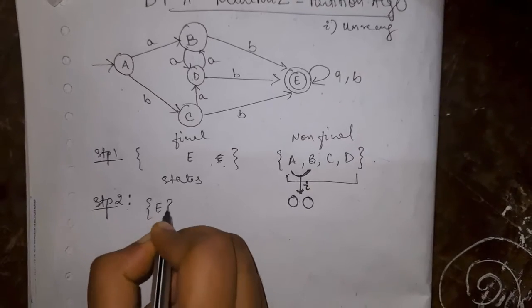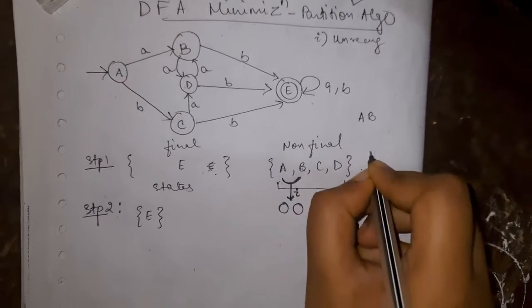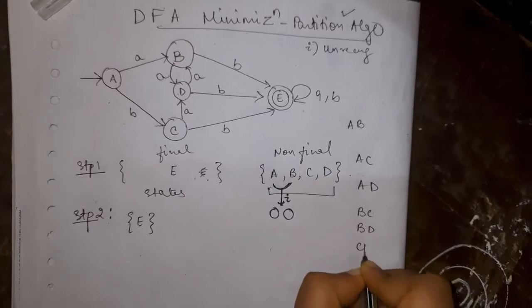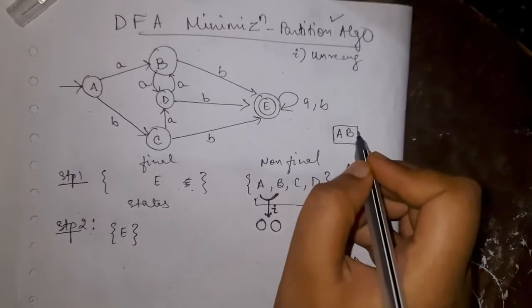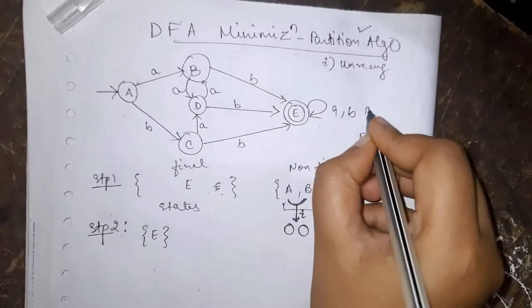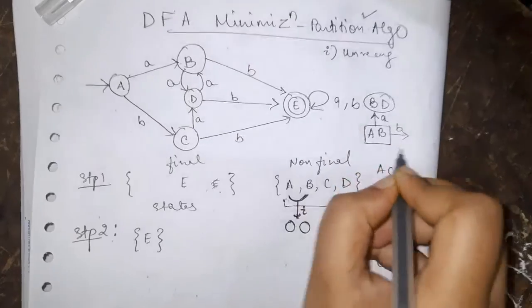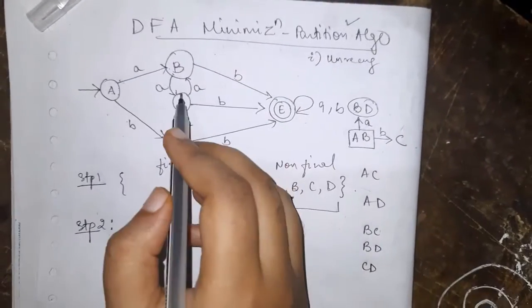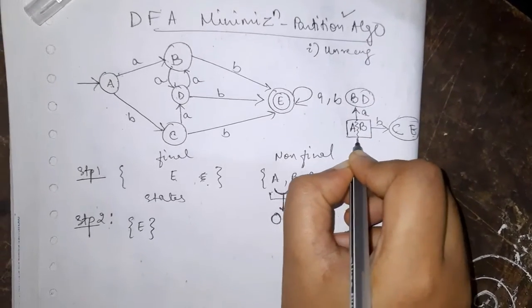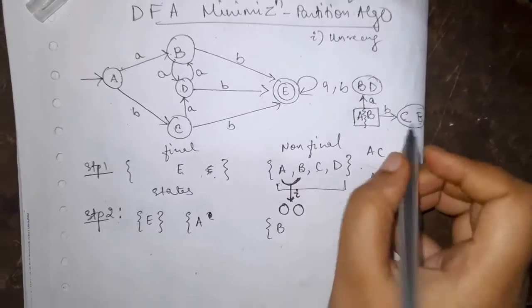The group E will remain the same whereas here I need to check for A, B, A, C, A, D, B, C, B, D and C, D. So for A, B on giving A it goes to B, B on A goes to D. B D in the same group. Yes. On giving B, A on B goes to C. B on B goes to E. C and E are different groups. Therefore A and B will be different. So A partition, another B partition.